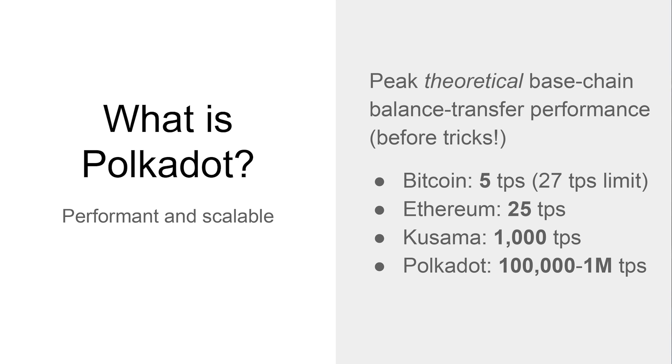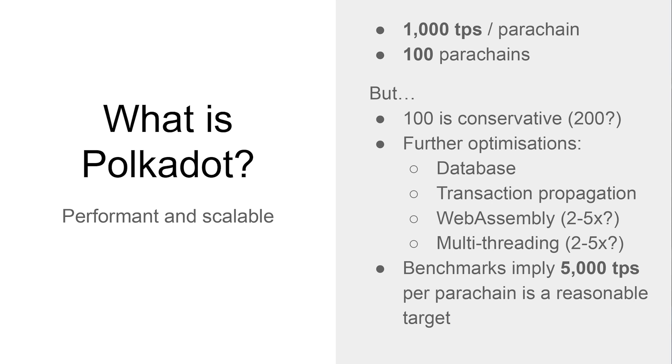Polkadot, with its parachains, will be scaling up to maybe a hundred thousand, up to maybe a million transactions per second. A thousand transactions per second on each parachain, times a hundred parachains, gives a hundred thousand transactions a second. A hundred is probably quite conservative — with design upgrades it might get up to maybe 200 parachains. There are further optimizations in terms of the database and IO storage layer and the WebAssembly interpreter layer. This is all fundamentally on a meta-protocol platform, which means it's upgradable. We also aim to bring in multi-threading, which will allow much better use of six and eight core CPUs.